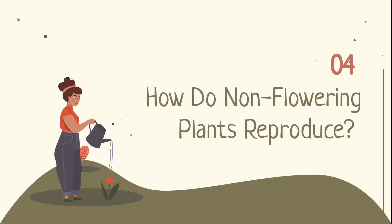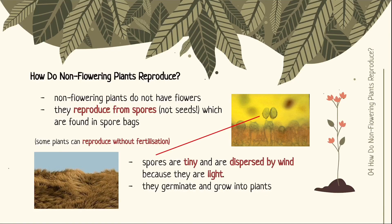What about non-flowering plants? How do they reproduce if they don't have flowers? Non-flowering plants such as mosses and ferns do not have flowers, so they reproduce from spores instead of seeds. These spores are found in spore banks. Note that plants can also reproduce without fertilisation — this is called asexual reproduction. Spores are tiny and dispersed by wind because they are so light, and just like seeds, they germinate and grow into plants when conditions are favourable.